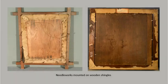Framed textiles are not immune to damage as original framing situations can pose a variety of problems. Many times, textiles are mounted on old wooden shingles, and this is noted to contribute greatly to the overall darkening and brittle character of the ground fabric, as wood contains acids which migrate and damage fibers.